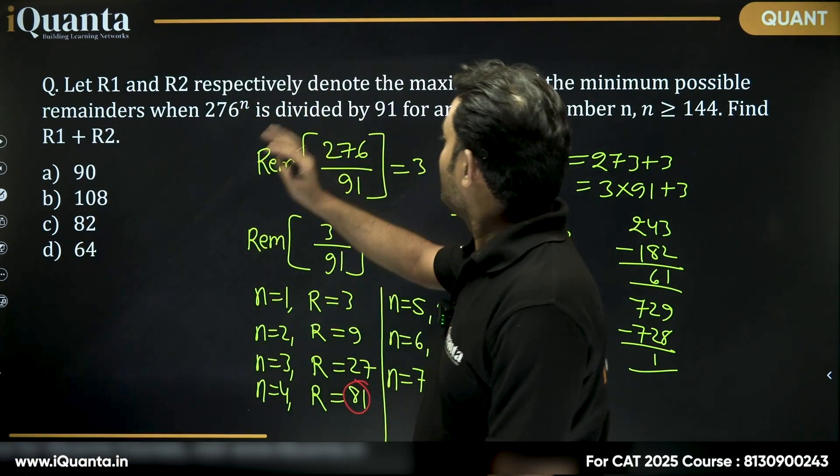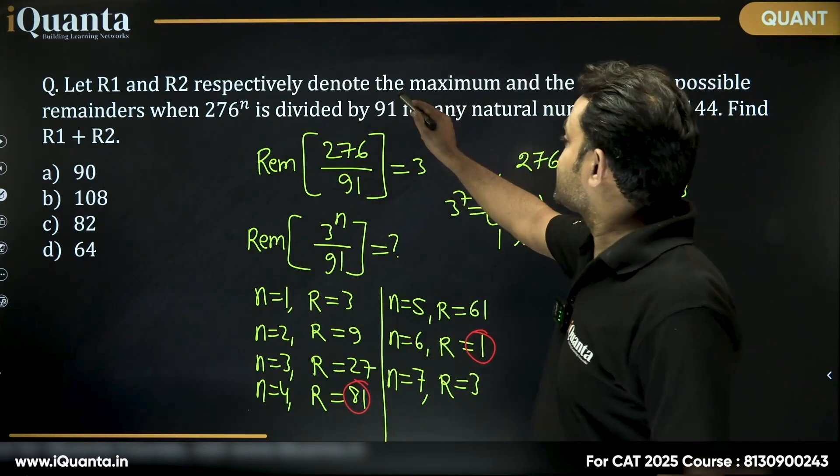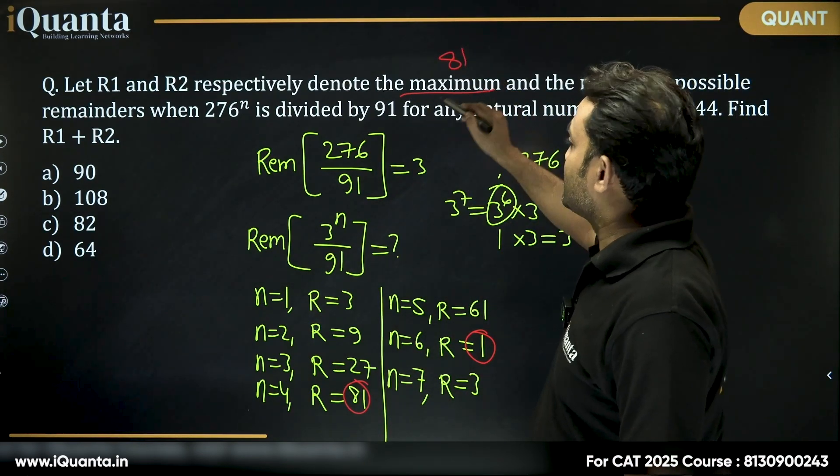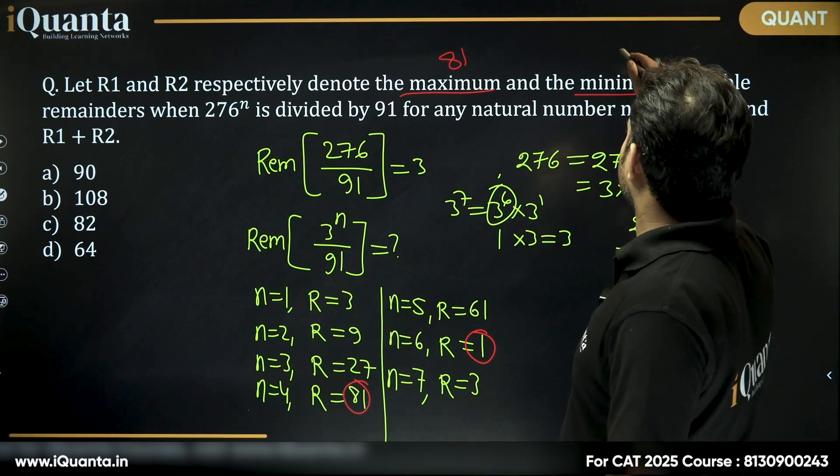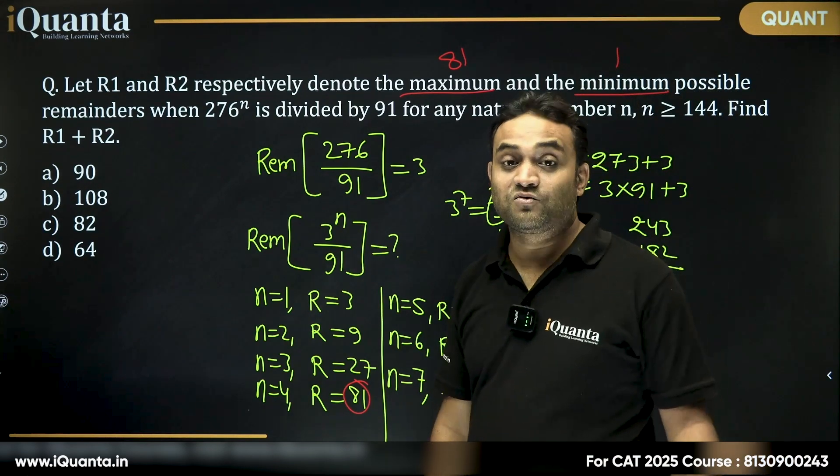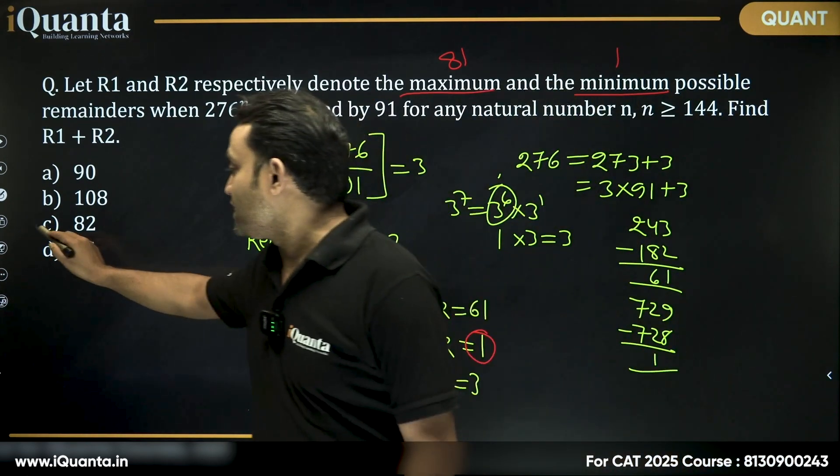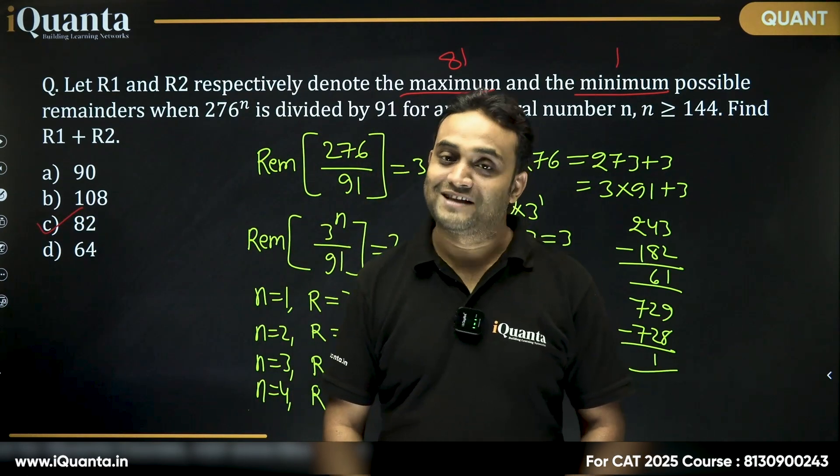So in this case, we can say R1 maximum will be equal to 81, R2 minimum will be equal to 1. Sum of R1 and R2 will be equal to 82. And that is our answer.